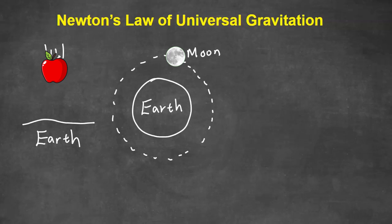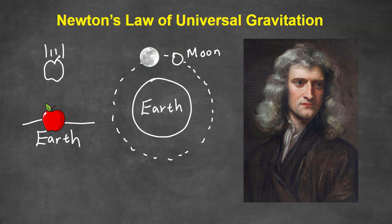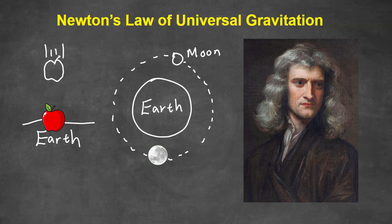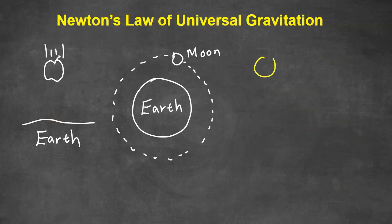In this video, we're going to talk about Newton's Law of Universal Gravitation. This was proposed by Isaac Newton in the late 1600s as he was observing not only an apple falling to the ground, but also looking at stars and planets and the moon and how they move. He proposed that the same force that causes the apple to fall to the earth is the same kind of force that keeps a moon orbiting around the earth.